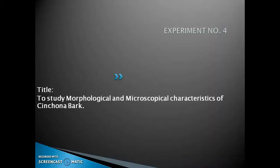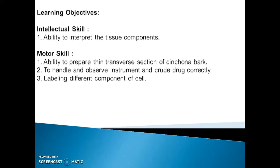In Experiment No. 4, the aim is to study the Morphological and Microscopical Characteristics of Cinchona Bark. Learning Objectives include Intellectual Skills: ability to interpret the tissue components; Motor Skills: ability to prepare thin transverse sections of Cinchona Bark, to handle and observe instruments and crude drugs correctly, and to label different components of the cell.